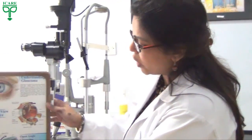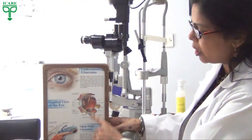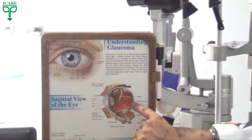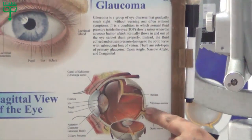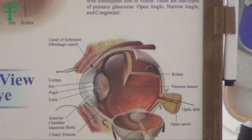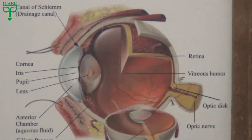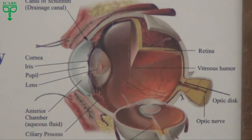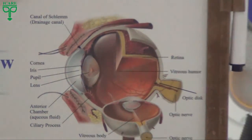The optic nerve is a structure that connects our eyes to our brain. As you can see in this figure, this is our eye structure and this is the optic nerve that connects our eye to our brain. In glaucoma, this optic nerve undergoes gradual damage.